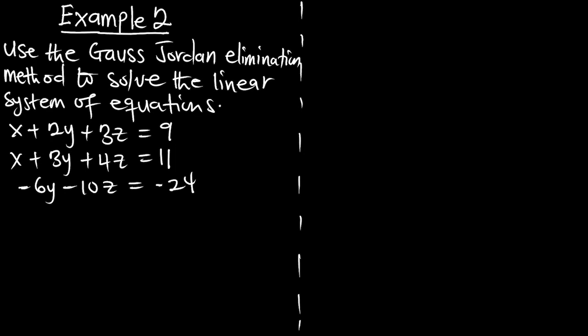In this episode, we are going to solve example 2 on the Gauss-Jordan elimination method. It says: use the Gauss-Jordan elimination method to solve the linear system of equations. This is equation 1, this is equation 2, and this is equation 3, and we are to solve them using the Gauss-Jordan elimination method.